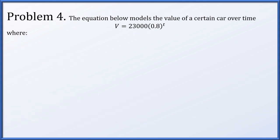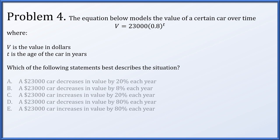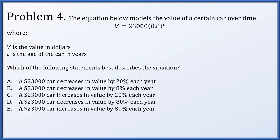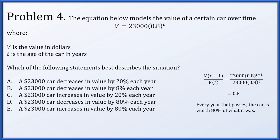Problem 4. The equation below models the value of a certain car over time: v equals 23,000 times 0.8 to the t, where v is the value in dollars and t is the age of the car in years. Just as in Problem 3, we compute the ratio v(t+1) divided by v(t). The 23,000s cancel, and 0.8 to the t in the denominator cancels most of the numerator's powers, leaving behind just one factor of 0.8. So every year the car is worth 80% of what it was the previous year — it is losing 20% of its value per year. That's option A.